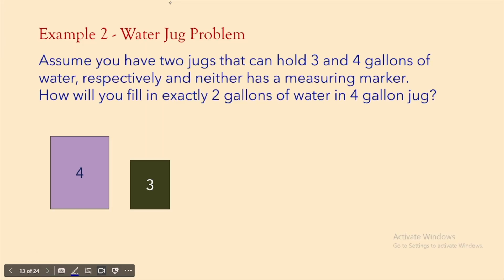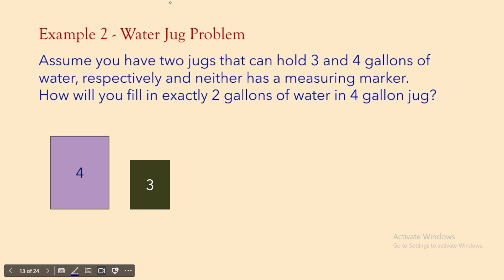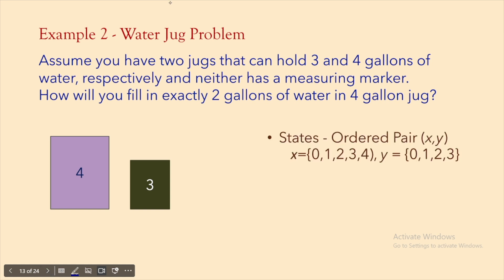The second example is the water jug problem. You have two jugs holding 3 and 4 gallons respectively, neither with a measuring marker. The goal is to fill exactly 2 gallons in the 4-gallon jug. The state is an ordered pair (x, y), where x ranges from 0 to 4 and y from 0 to 3. The initial state is (0, 0) — no water. The final state is (2, 0). Actions include filling a jug, emptying a jug, or transferring water between jugs.